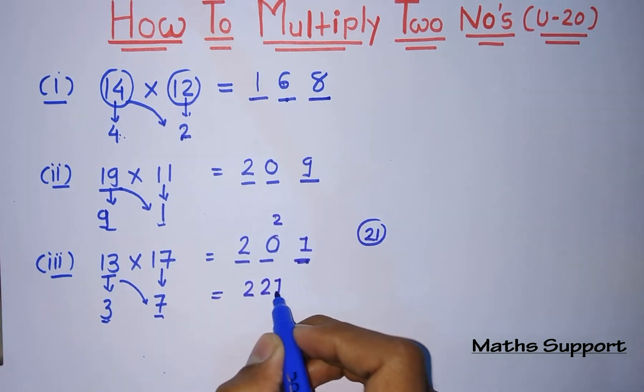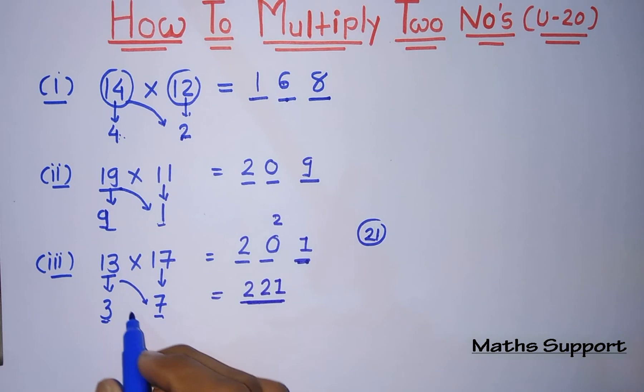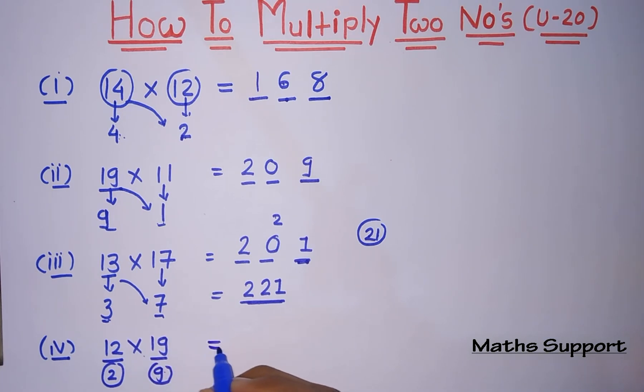Suppose you are finding multiplication of 12 into 19. First step is this is 2 from 10, this is 9 from 10. Now for the first two digits, add these two numbers, 12 plus 9, that is 21.